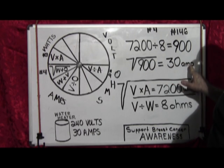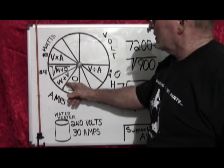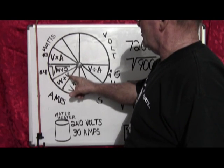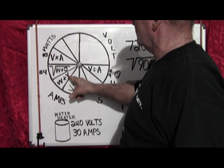We're going to move on to watts divided by volts equals amps.